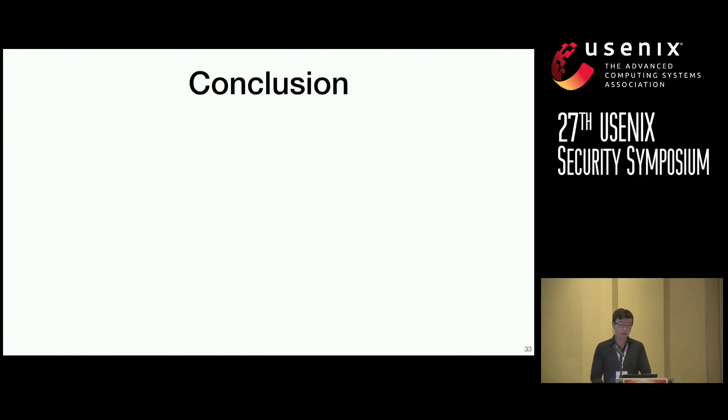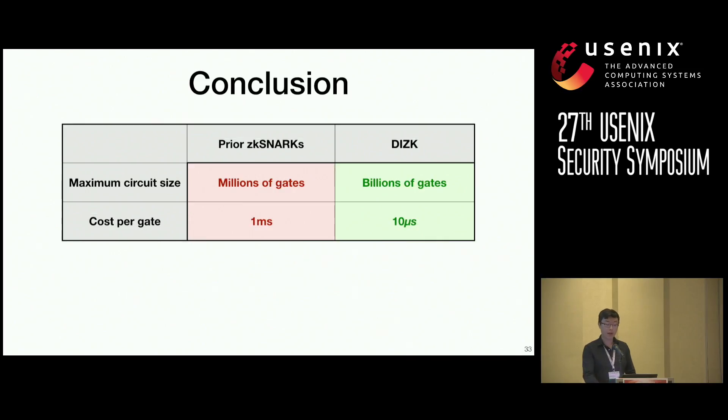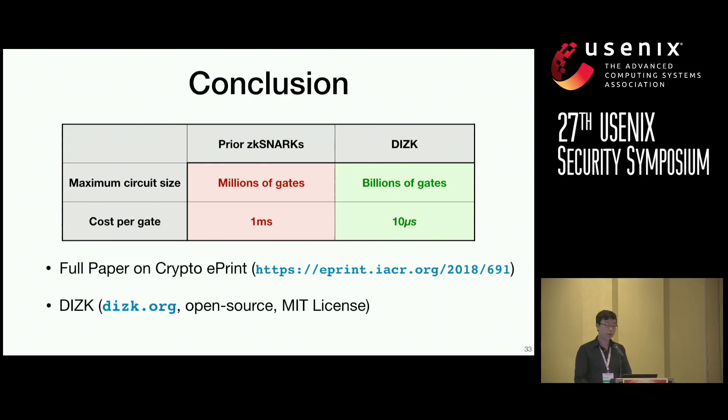So, in conclusion, we found that prior ZK-SNARKs support maximum circuit sizes of approximately millions of gates at an amortized cost per gate of about one millisecond. And we find with our techniques that DIZIK is able to support maximum circuit sizes in the billions of gates at an amortized cost per gate of 10 microseconds. The full paper is available on Crypto ePrint, and I'm proud to say that we have released DIZIK as an open source library on GitHub. You can find it by going to dizik.org. And we've put a lot of hard work into making this library available to the public with a convenient profiling infrastructure so that you can replicate our results as well as build new and interesting applications using DIZIK.